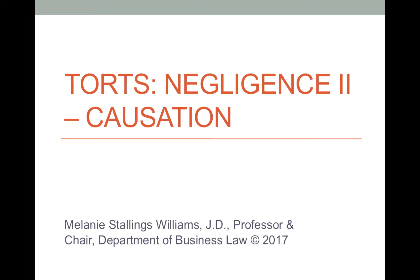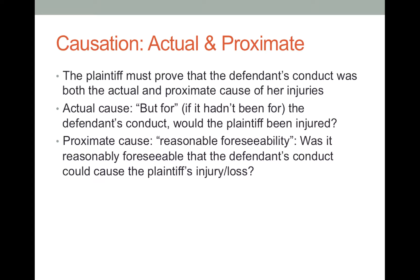Let's talk about the remaining elements of the tort of negligence. We started out by mentioning that negligence has four essential elements — and by essential I mean if one is missing, the tort has not occurred. The first two we talked about were duty: did the defendant owe a duty to the plaintiff, and secondly whether that duty was breached — did the defendant fail to exercise reasonable care causing harm to the plaintiff. The third and fourth elements of negligence are causation and finally damages.